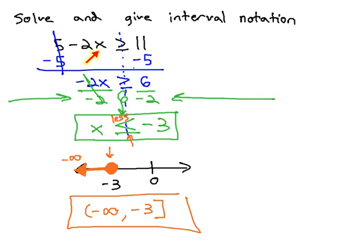For example, if we use negative 10, which is certainly smaller than negative 3, negative 2 times negative 10 is positive 20, plus 5 is positive 25, which is greater than or equal to 11, like we want.